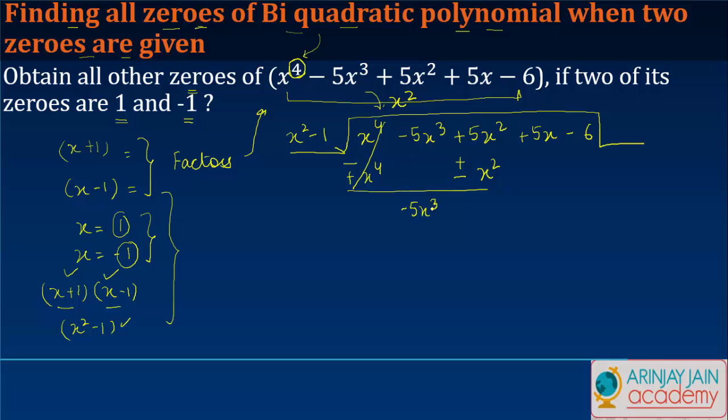Take down -5x³ + 6x². Now I multiply this by -5x because -5x into x² gives me -5x³ and -5x into -1 gives me +5x. I will also bring down this 5x over here, and then -5x into -1 gives me +5x and I'll put this +5x over here.